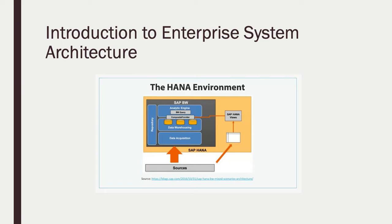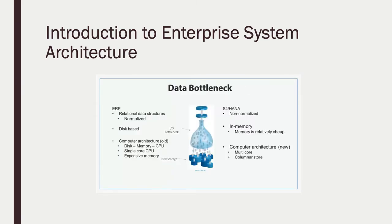SAP S4/HANA provides a new approach in the enterprise system environment with a different type of structured database. Traditional database systems are created using relational data structures, or tables, which are normalized and connected. Data is stored and accessed by a single-core CPU with expensive memory upgrades. In S4/HANA, data is stored in non-normalized form, stored in memory, and dual-core processors provide faster decisions at lower cost.